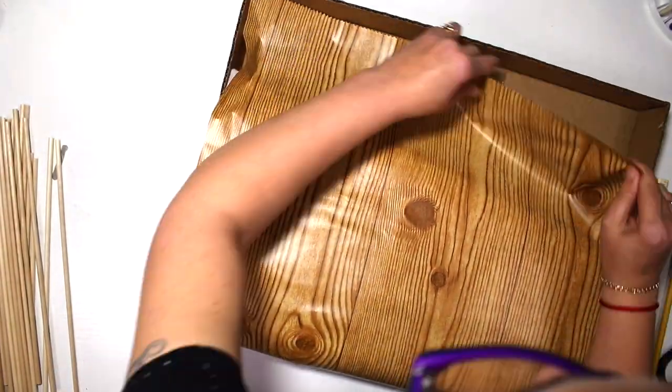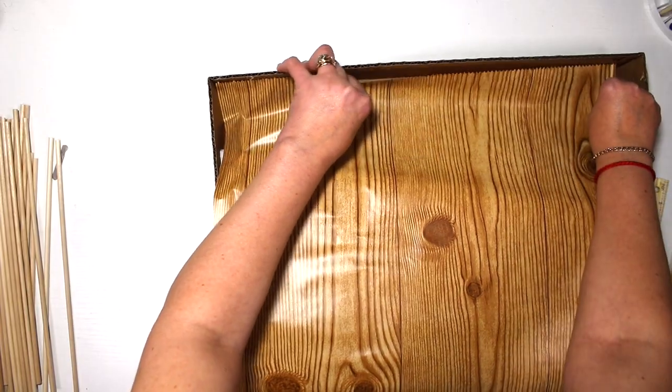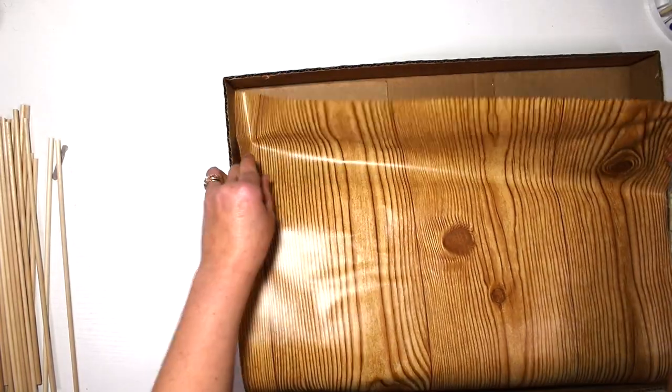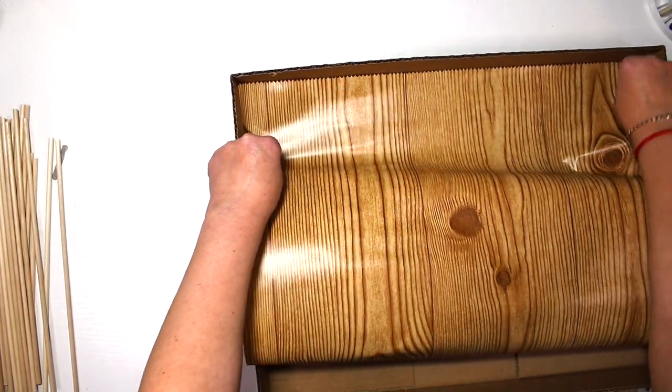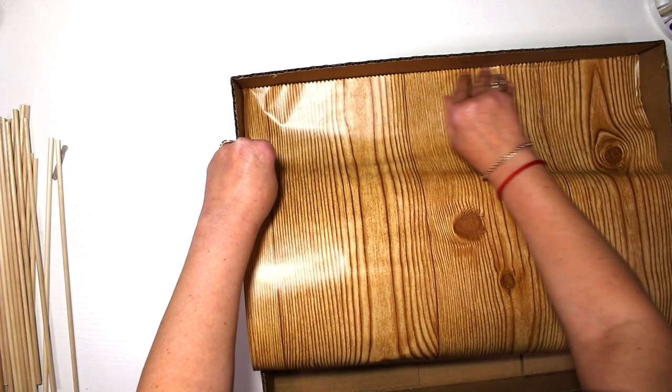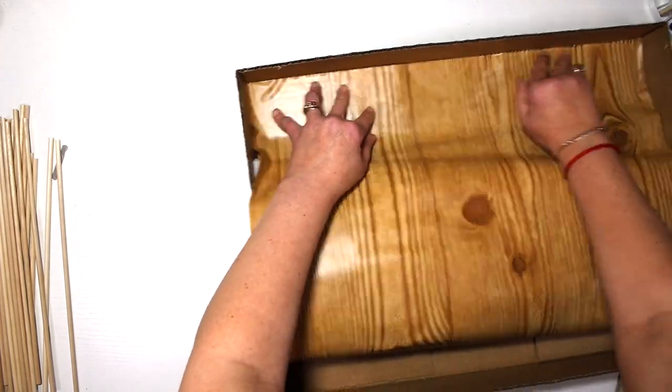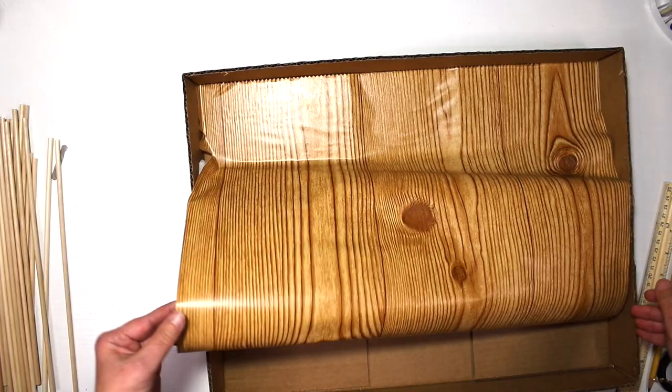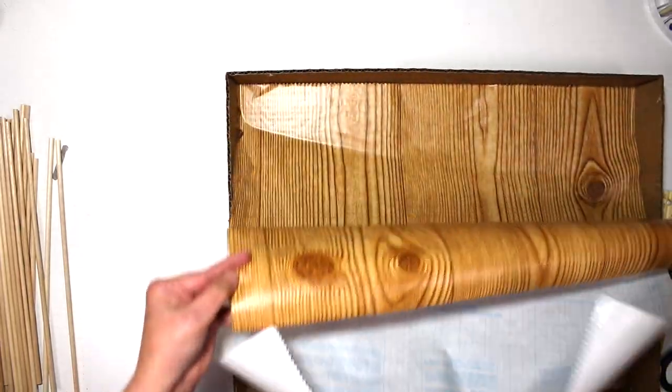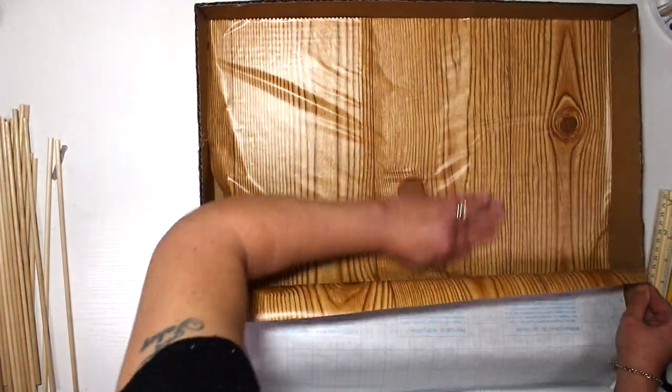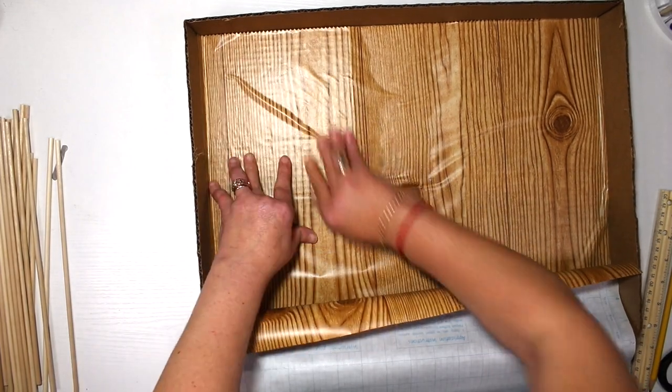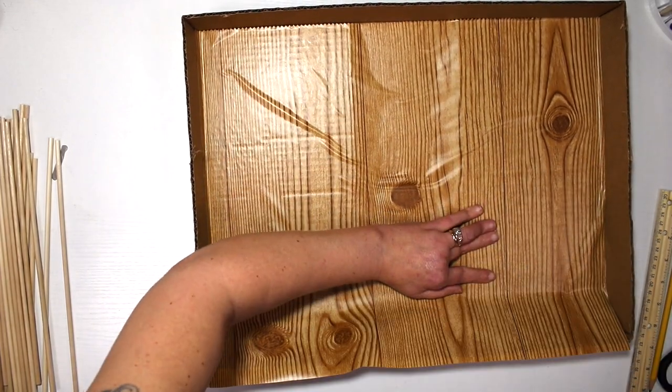Then I used the shelf liner from the Dollar Tree because my little puppy does not like to sit on fuzzy things. He likes it to be really firm, which is weird but okay, whatever he likes. So I lined it up all inside the box and then I did the sides so it's all nice and looks kind of like wood, so he will not think it's cardboard.